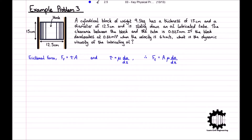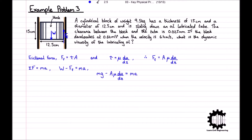Having derived that expression, we must now recall that the sum of all forces applied to the block is equal to the mass of the block times the acceleration. We have already expressed the frictional force, but we also have the weight of the block due to gravity, which is equal to mg. Taking the downwards direction to be positive, as this is the direction the block is moving in, and substituting the forces into our equation for the sum of forces, we get W minus FF, which equals mg minus A mu du by dz equals ma. Note that we are subtracting FF from W, as FF is being applied in the upwards direction, which for us is negative in this example. Now we just need to rearrange the equation for the dynamic viscosity of the oil, mu. Having rearranged the equation, we get mu is equal to m times (g minus a) all divided by A times dz by du.